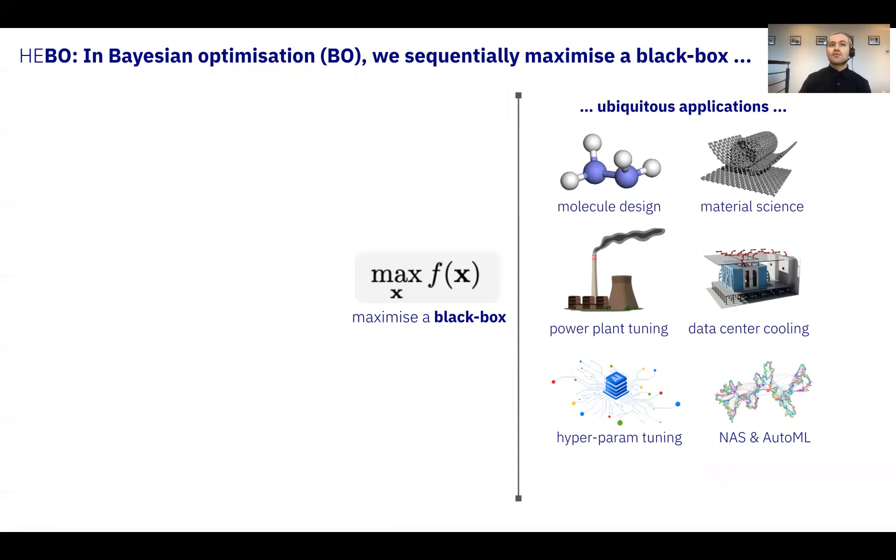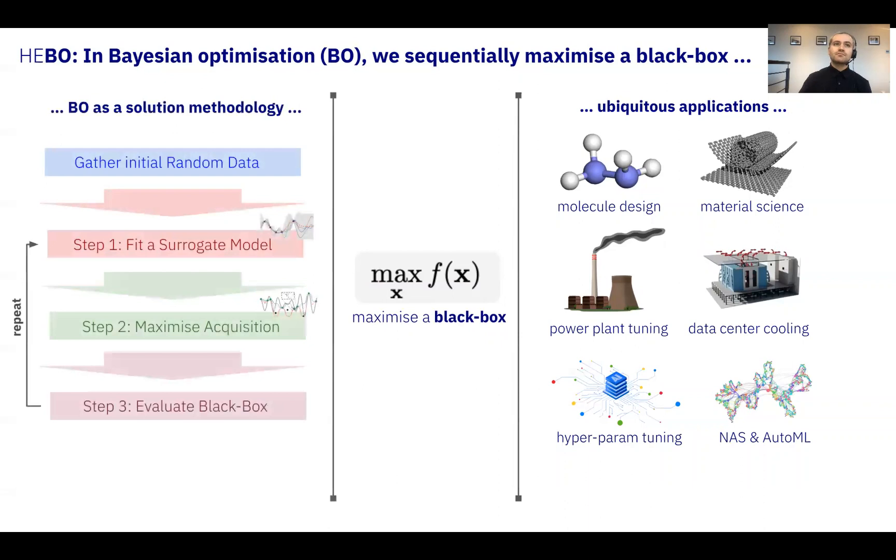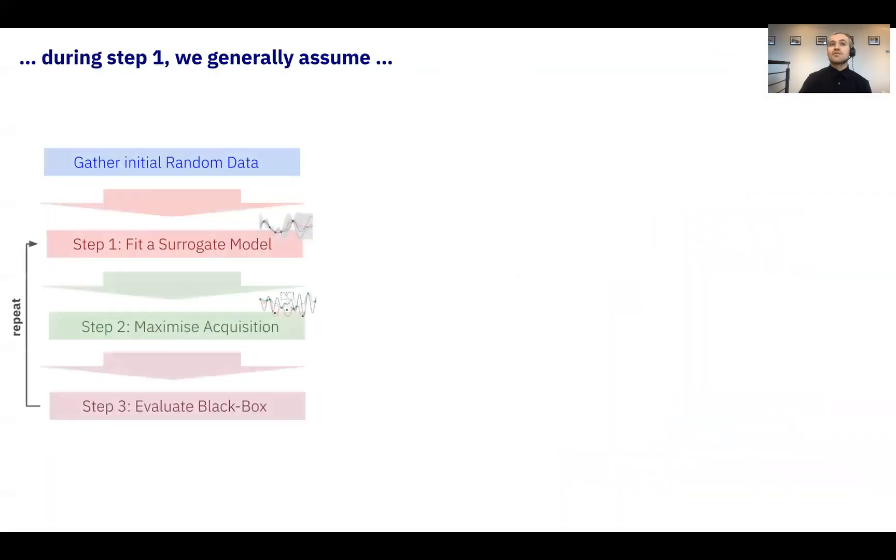One way of solving this problem is to follow a Bayesian optimization scheme that executes the following three steps. In the first step, a surrogate model, usually a Gaussian process, is fit. With that acquired, the second maximizes an acquisition to determine new search points. The third then evaluates new inputs by querying the black box, and the above process repeats.